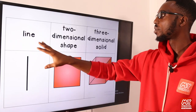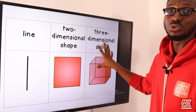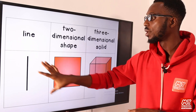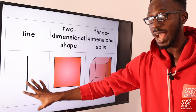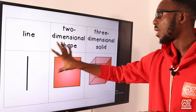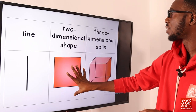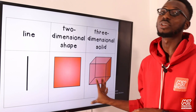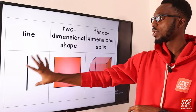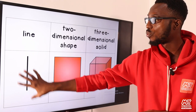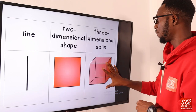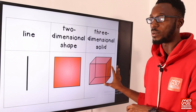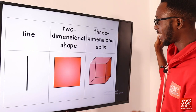To do a quick run-through: we have a line, we have a two-dimensional shape, and we have a three-dimensional shape — just to show you where we are actually coming from and the journey so far.